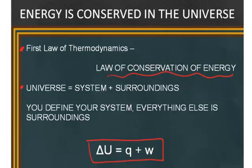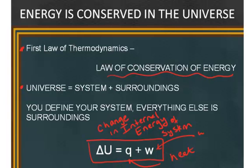Delta U is change in internal energy of the system. Q is the symbol we use for heat and W is the symbol we use for work.